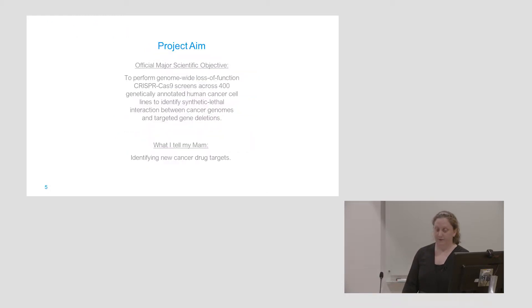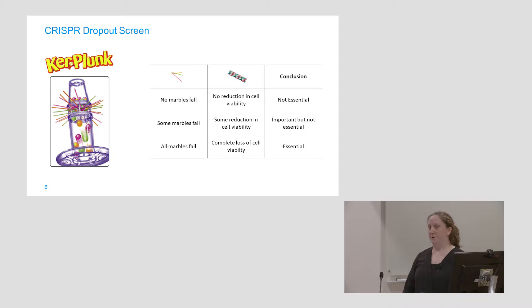That's what my project is. We have this fancy major scientific objective that we put in the grant to convince people to give us money. Basically, as I tell my mom, I'm just looking for new cancer drug targets and use CRISPR to do this. So how do I go about this? I play a giant game of kerplunk.